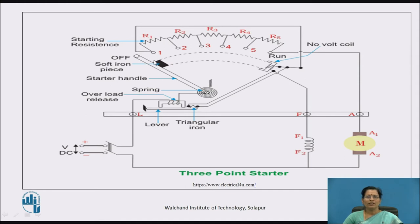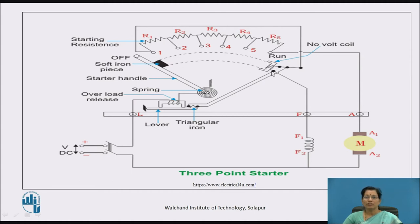When we move this handle to the first position, the total resistance is connected in series with the armature. Due to this series resistance, we can limit the starting current. Then afterwards, we move this handle from first to second, second to third, and so on, up to the run position. When current flows through the no-volt coil, it creates a magnetic field, and this arm is held by the no-volt coil because a magnetic material is connected here, and the overload coil is connected here.